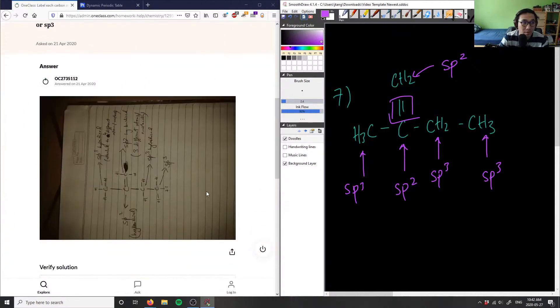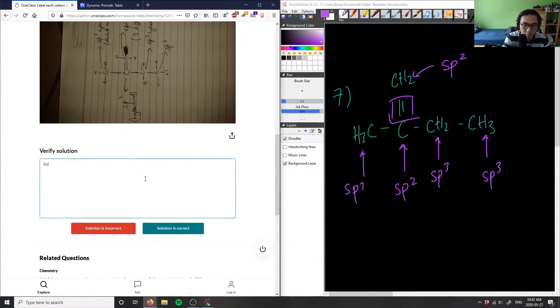So let's see: sp3, which is good; this one's sp2; this was sp2; sp3; sp3. So the solution here is correct.